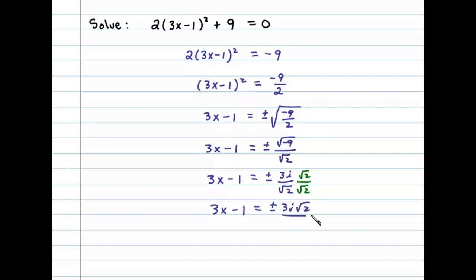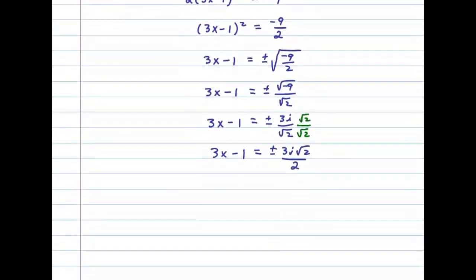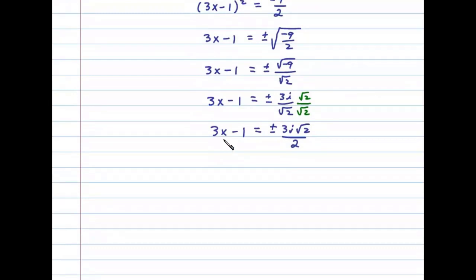At this point, we solve for x. We'll begin by adding 1 to both sides, which leaves us with 3x = 1 ± (3i√2)/2.